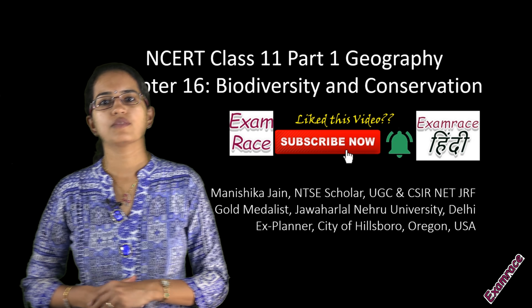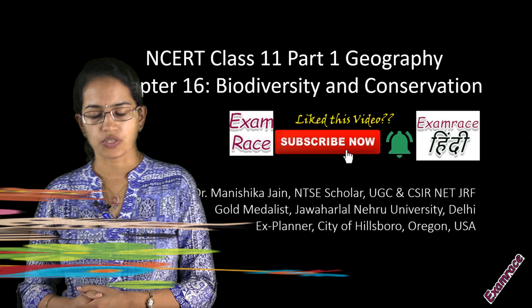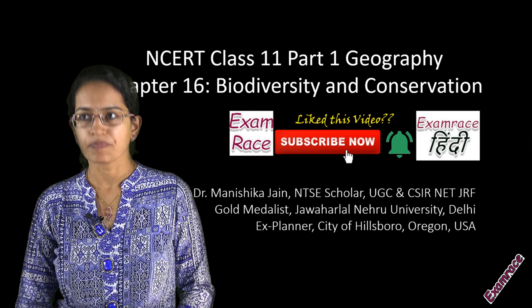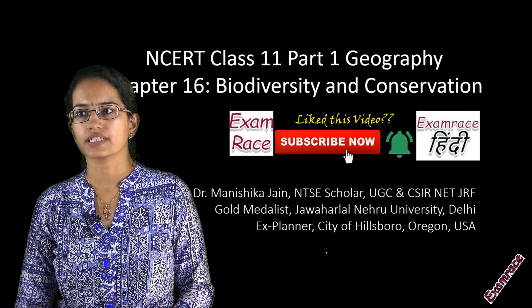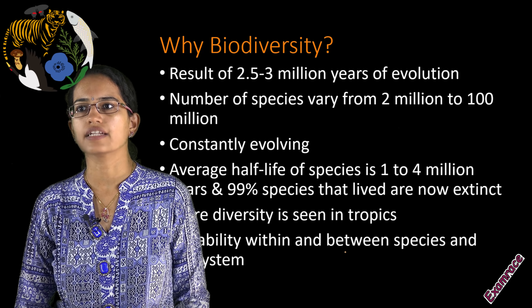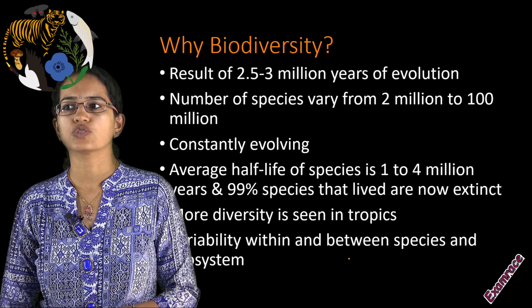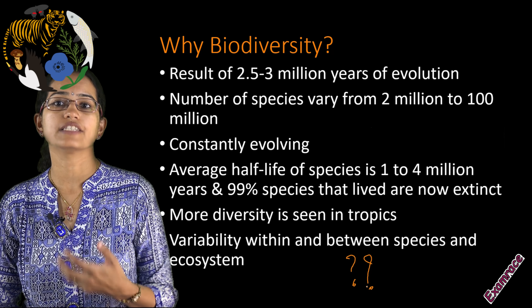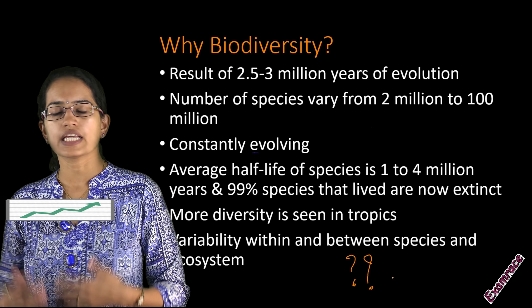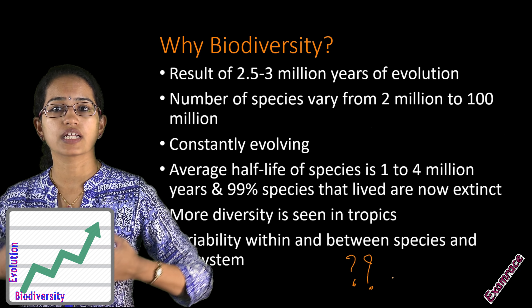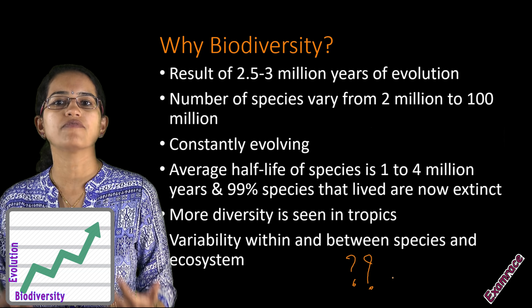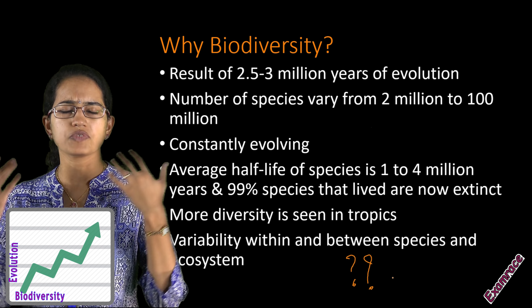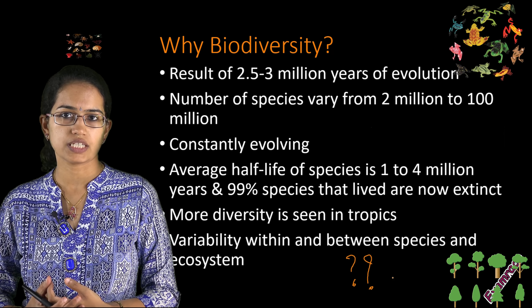Welcome. Let's begin with the last chapter for Class 11 Geography. Today we would be talking about biodiversity and conservation. Biodiversity has been ever-changing — with evolution we have nearly a history of 2.5 to 3 million years, and over those periods we have witnessed more than 1 to 4 million species.